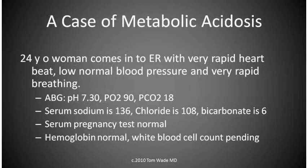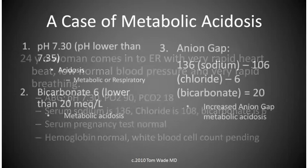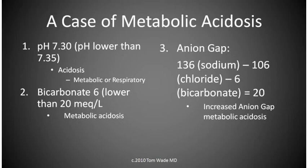Now let's go through a case of metabolic acidosis. A 24-year-old woman comes into the emergency department with a very rapid heartbeat, low normal blood pressure, and very rapid breathing. The laboratory studies are as noted on the slide. Let's go through this and see what the diagnosis is. First, we note the pH is 7.30, which is below the normal of 7.35.